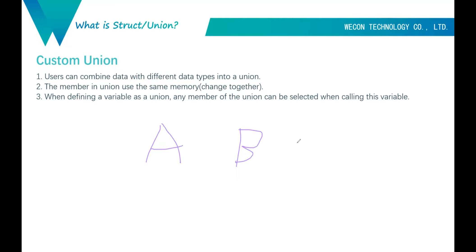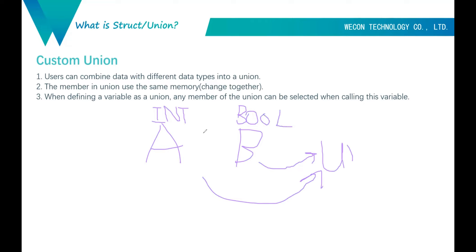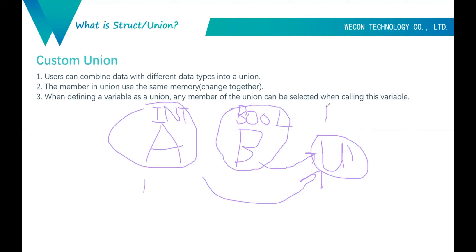For example, if we change A to 1, B will turn on. And if we reset B — set this bool to false — at the same time, int A will be changed to zero. They change together because they use the same memory.